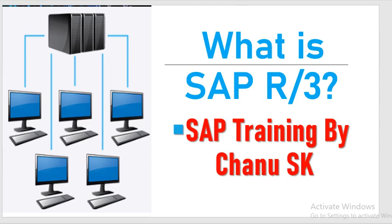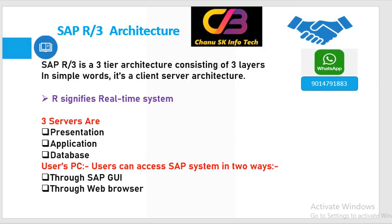Let's move on to the topic: SAP R/3 architecture. Here, R signifies real-time system — R stands for real-time system. SAP has three kinds of servers or layers: the presentation layer, the application layer, and the database layer. This three-tier architecture is a client-server architecture.